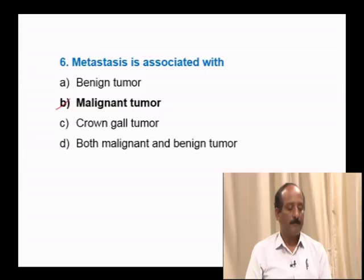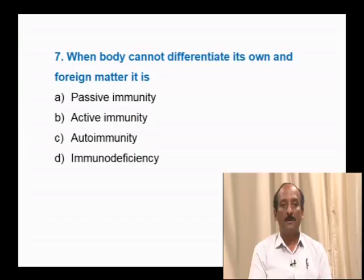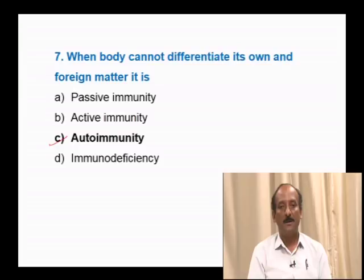Question number 7: When the body cannot differentiate its own and foreign matter, it is — passive immunity, active immunity, autoimmunity, immunodeficiency. When the immune system fights against our own body cells, it results in autoimmune disorders. Examples of autoimmune disorders are rheumatoid arthritis, multiple sclerosis, and Graves' disease. The correct answer is option C: autoimmunity.